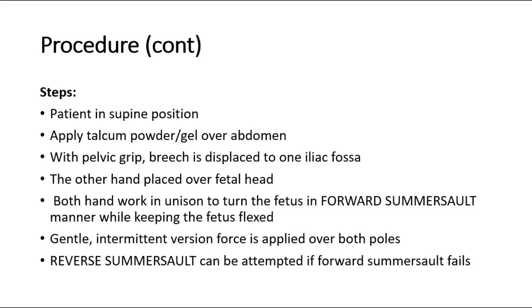These are the steps of external cephalic version. Place the patient in a supine position, apply powder or gel over the abdomen, and with a pelvic grip, the breech is displaced to one iliac fossa while the other hand is placed over the fetal head. Both hands work together to turn the fetus in a forward somersault manner while keeping the fetus flexed. Gentle intermittent version force is applied over both poles. If the forward somersault fails, we can attempt a reverse somersault.